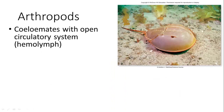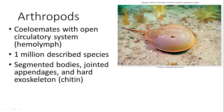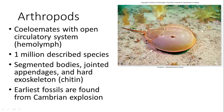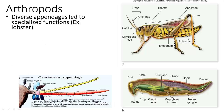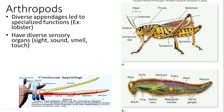Arthropods are very diverse coelomates with an open circulatory system and hemolymph instead of blood. There are one million described species. They have segmented bodies, jointed appendages, and hard exoskeletons. The earliest fossils come from the Cambrian explosion, including horseshoe crab-like ancestors. A diversity of appendages has allowed them to radiate into many different organisms with specialized functions — for example, the grasshopper has legs and wings used for jumping and other activities.